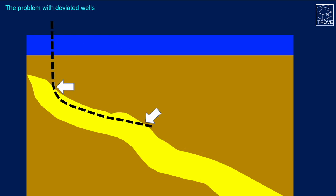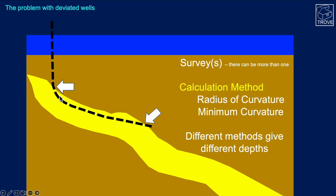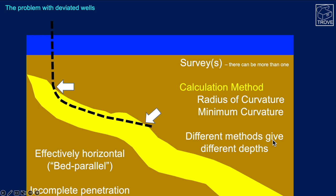The problem with deviated wells: many of the wells we drill target particular parts of the reservoir. Here we're trying to maximize the exposure of the hole to the sandstone formation — we've built up the angle, staying parallel to the roof of the sandstone unit, and then popping out. In this well, we've got two tops. There are different ways to calculate true vertical depth, azimuth, and step out — including radius of curvature and minimum curvature — and different methods yield different depths. We're drilling what is effectively a bed-parallel, essentially horizontal, well. But we end up with an incomplete penetration, never really finding out how thick this particular unit is.